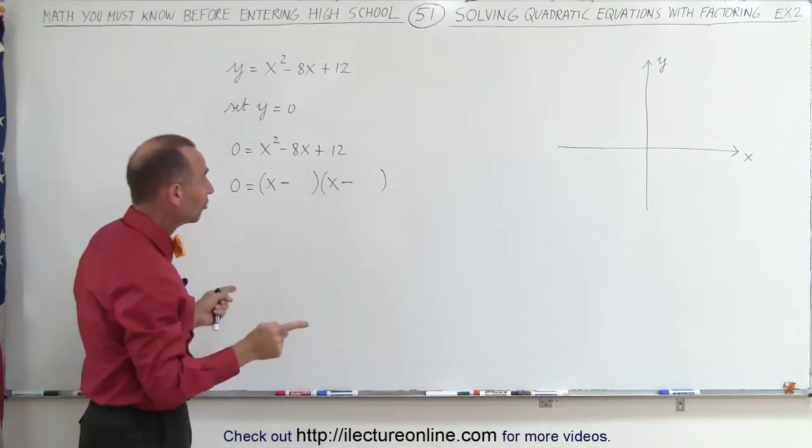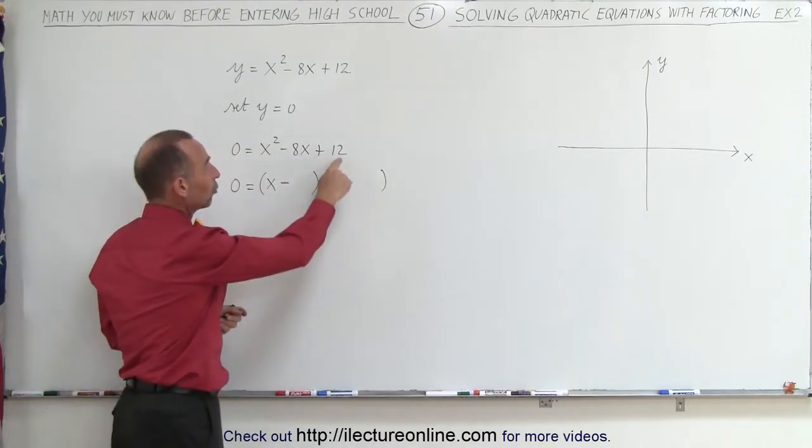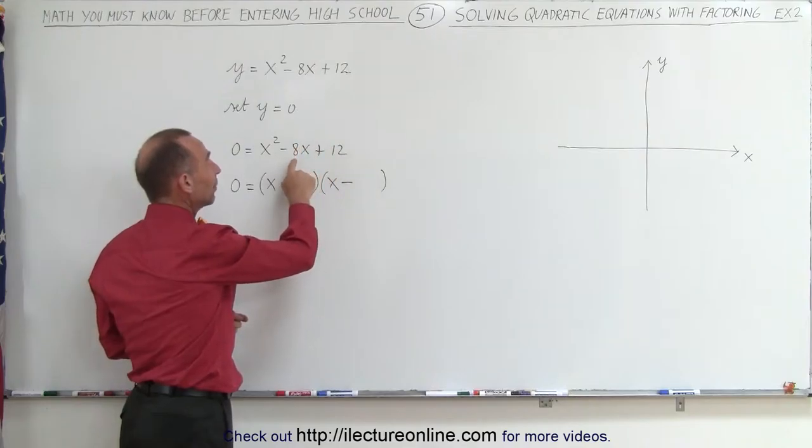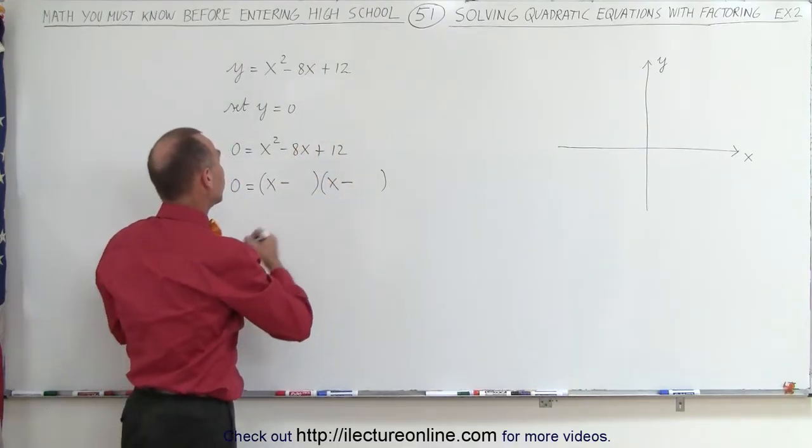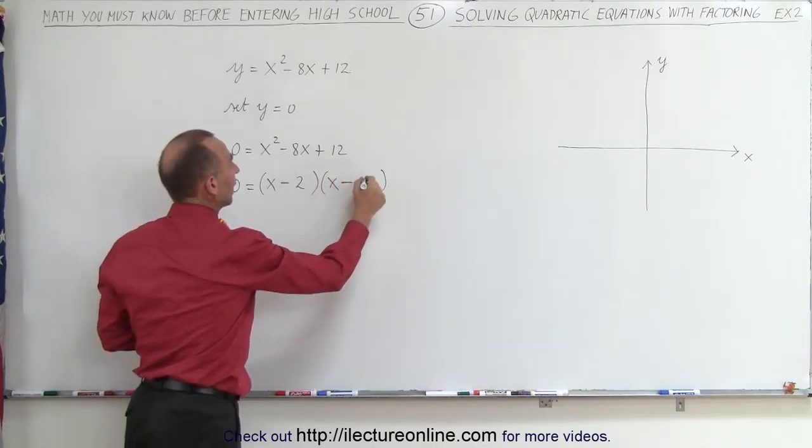Now we're looking for two numbers such that when you multiply them together you get 12, and when you add them together you get -8. Negative 2 and negative 6 would do the trick.